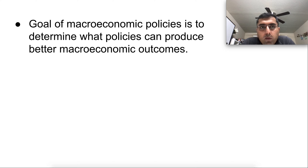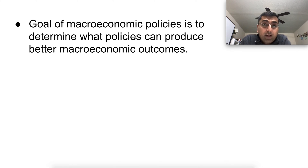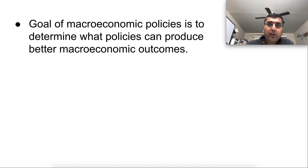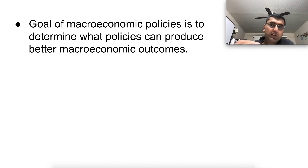The overall goal of macroeconomic policy is to determine what policies can produce better macroeconomic outcomes. In 2020, the government and the Federal Reserve acted when they saw the pandemic — they cut rates. We learn how those decisions helped unemployment recover, helped people survive, and reduced structural damage to the economy.